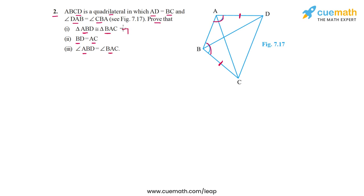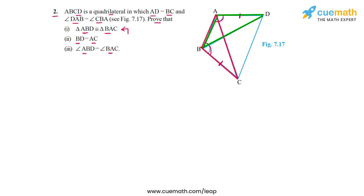Let's start by proving that triangle ABD is congruent to triangle BAC. For that purpose, let's highlight the two triangles first so it's clear which two triangles we are trying to prove as congruent. Triangle ABD is this triangle, and triangle BAC is this triangle. These are the two triangles we have to prove as congruent.